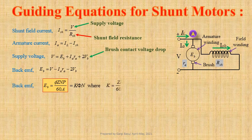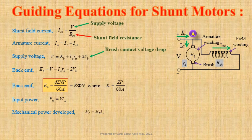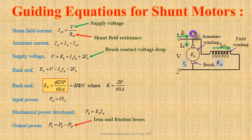Here K equals ZP divided by 60A is a constant. Input power PIN equals V times IL. Mechanical power developed in the armature winding PD equals EB times IA. Output power or shaft power PO equals PD minus PFR, where PFR is the iron and friction losses of the motor, or PO equals PIN minus PT, where PT is the total losses. PT equals PC plus IA² times RA, where PC is the constant losses.